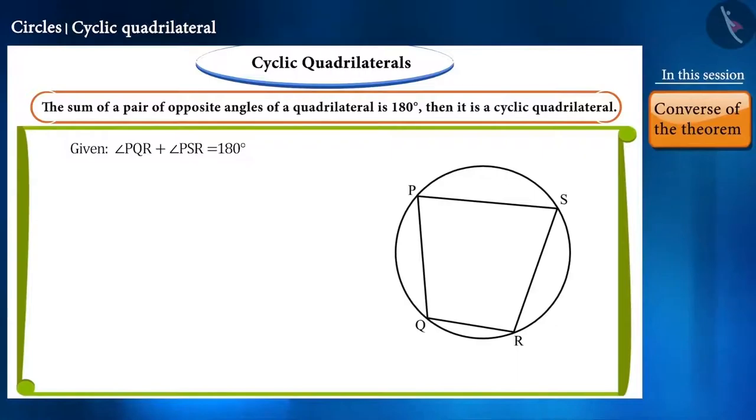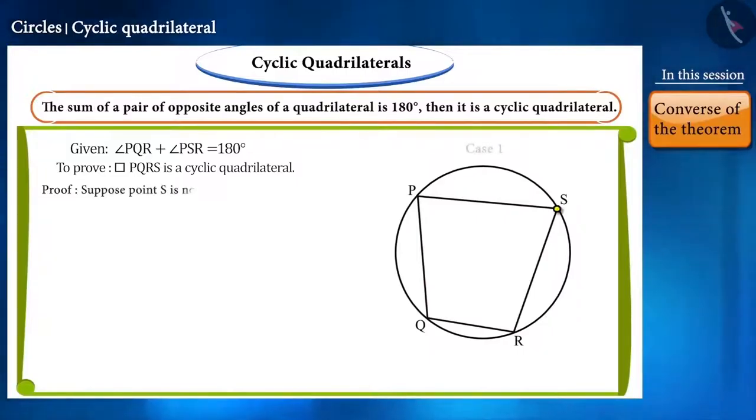Now, if we prove that point S is also located on this circle, then we can say that PQRS is a cyclic quadrilateral. So let's assume that point S is not located on the circle.